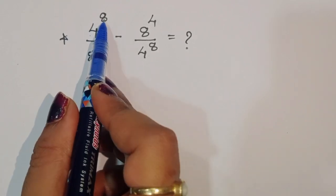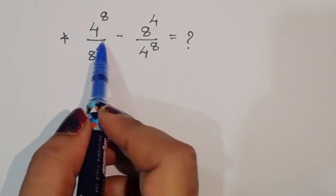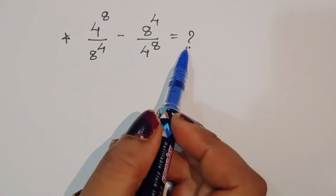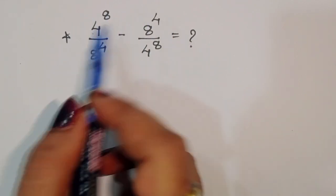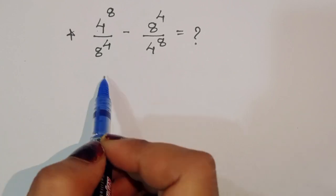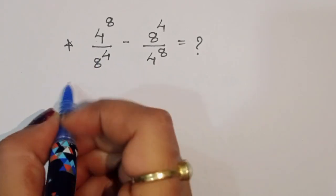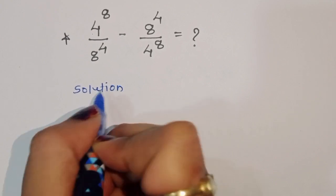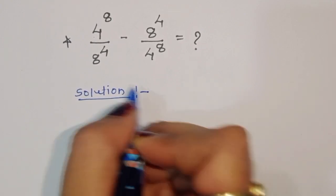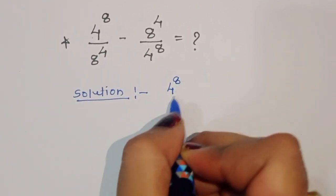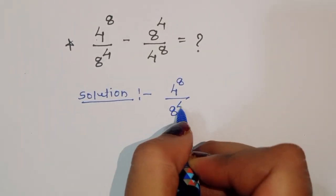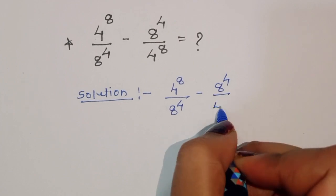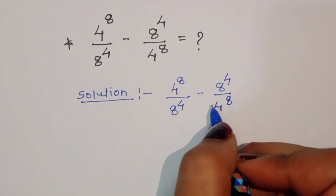The question is: 4 power 8 divided by 8 power 4, minus 8 power 4 divided by 4 power 8 — what is this equal to? We have to find out the value of this. Let's see the solution and find out how we can solve it.